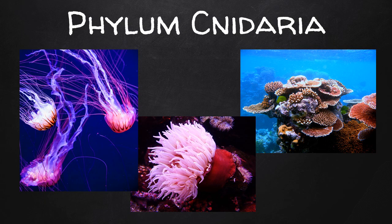All animals in phylum Cnidaria have stinging cells. These include jellyfish, sea anemones, and corals. Most of these have radial symmetry.